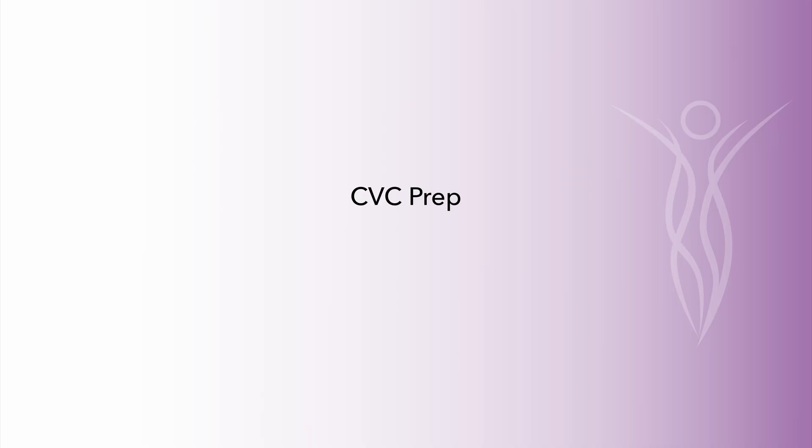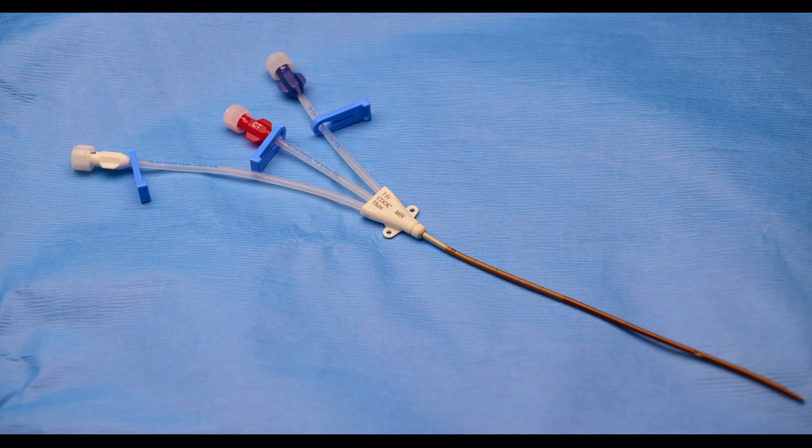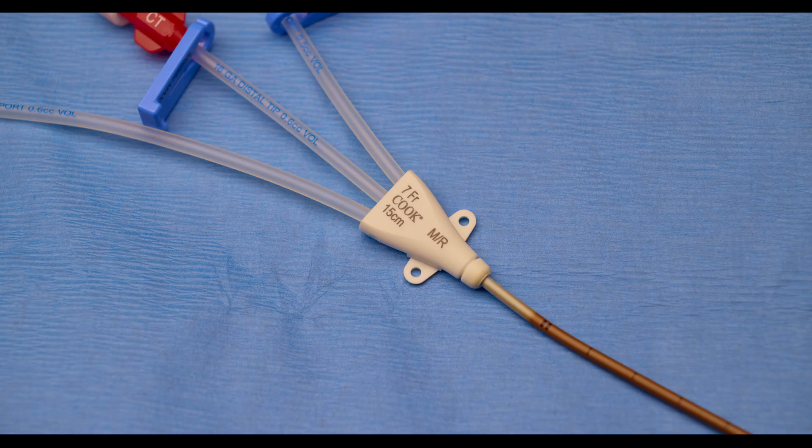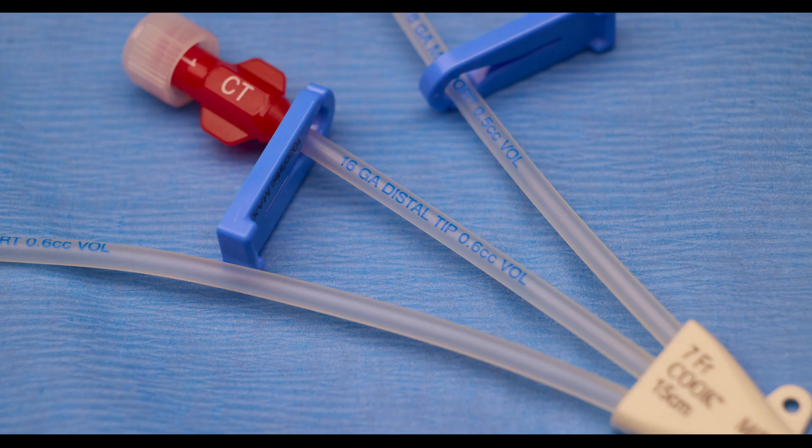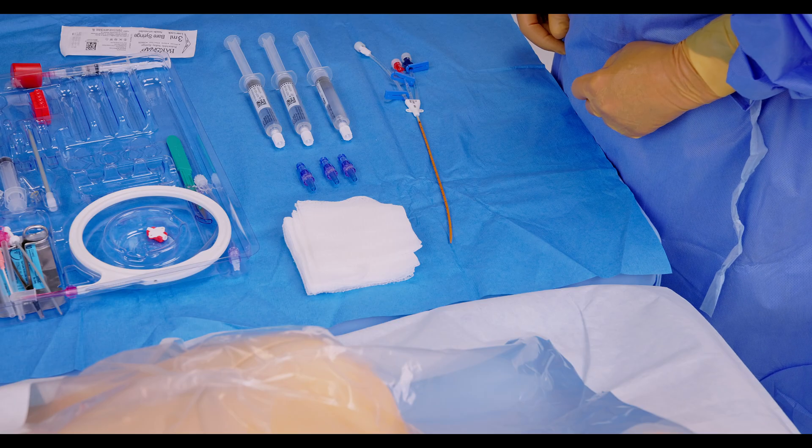With the sterile field established, we now proceed with catheter preparation. Begin by identifying the French size and length of the catheter, both of which are clearly marked on the catheter hub. The MR marking on the catheter hub signifies that the catheter is impregnated with minocycline and rifampin. These antimicrobial agents are embedded throughout the entire catheter body to help reduce the risk of catheter-related bloodstream infections. The distal lumen hub is labeled with CT to indicate it is compatible with power injection. Additionally, the transparent tubing displays the recommended flushing volumes.